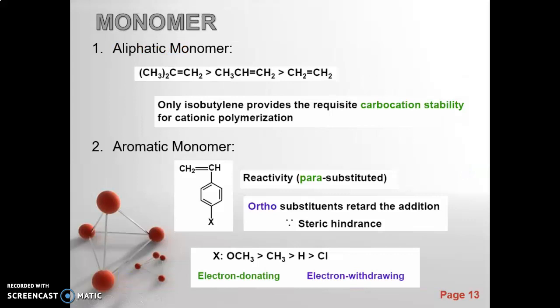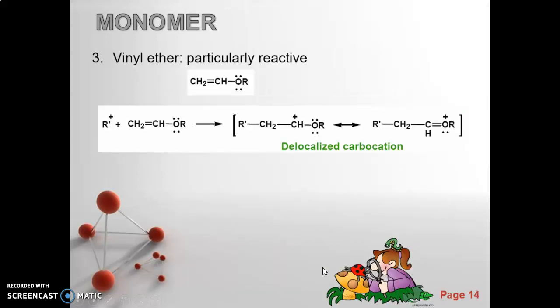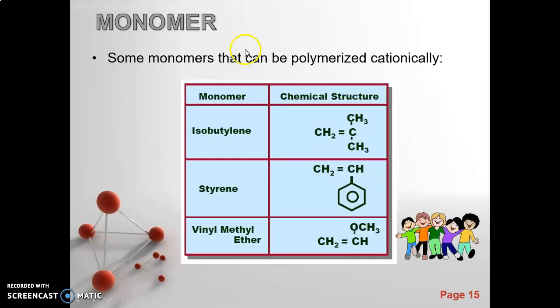Types of monomers for cationic polymerization: Aliphatic monomers, where isobutylene provides the requisite carbocation stability for cationic polymerization. Aromatic monomers. And vinyl ethers are particularly reactive. Let me show you some monomers with their structures.